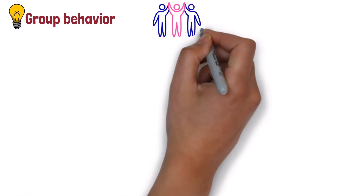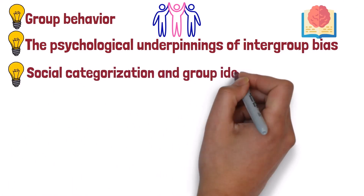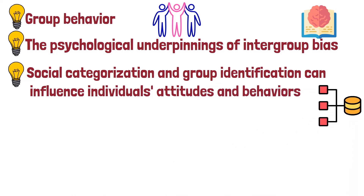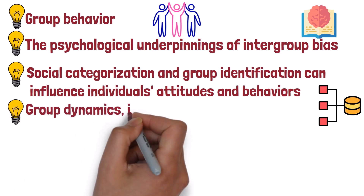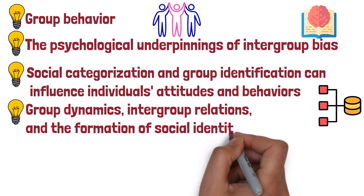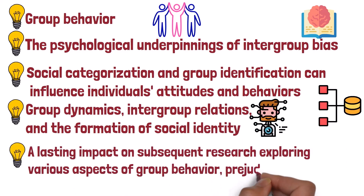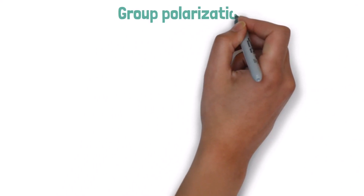These experiments were groundbreaking in their implications for understanding group behavior and the psychological underpinnings of intergroup bias. They demonstrated that social categorization and group identification can influence individuals' attitudes and behaviors even in the absence of meaningful group distinctions. Tajfel's minimal group experiments continue to be highly influential in social psychology, contributing to our understanding of group dynamics, intergroup relations, and the formation of social identity.